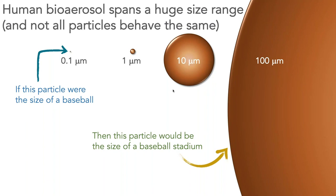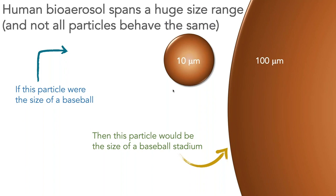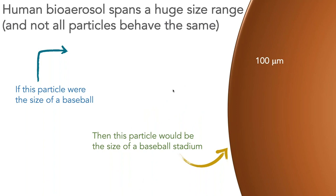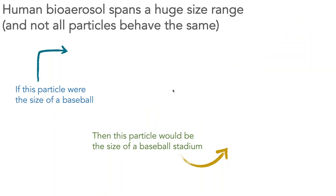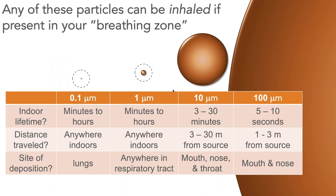A 0.1 micron particle behaves very much like a gas molecule — it floats around and gets pushed wherever the air goes. A 1 micron particle also gets pushed around by air and stays airborne for minutes to hours. A 10 micron particle starts to feel the effects of gravity slightly, settling only very gradually. Only a 100 micron particle — the size of a flour grain — drops out of the room relatively quickly, on the order of seconds. The indoor lifetime of a 0.1 or 1 micron particle is minutes to hours; a 10 micron particle can stay airborne for 3 to 30 minutes. Only the 100 micron particle falls out of the air relatively quickly.